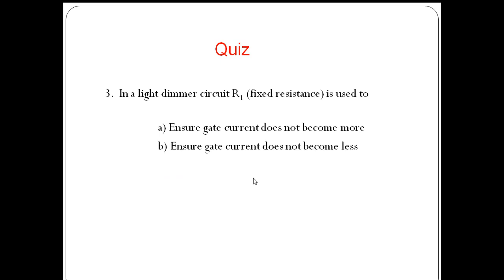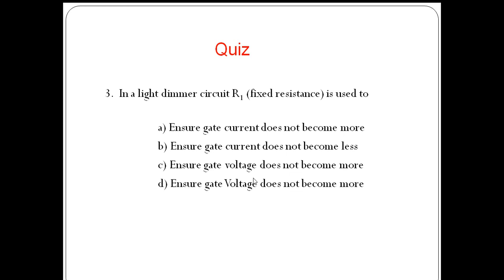In the light dimmer circuit, the fixed resistance R1 is used to: ensure gate current does not become more, ensure gate current does not become lesser, or ensure gate voltage does not become more? The answer is option A — it ensures the gate current does not exceed the rated maximum value, thus the fixed resistance is connected in the circuit for gate current limiting.